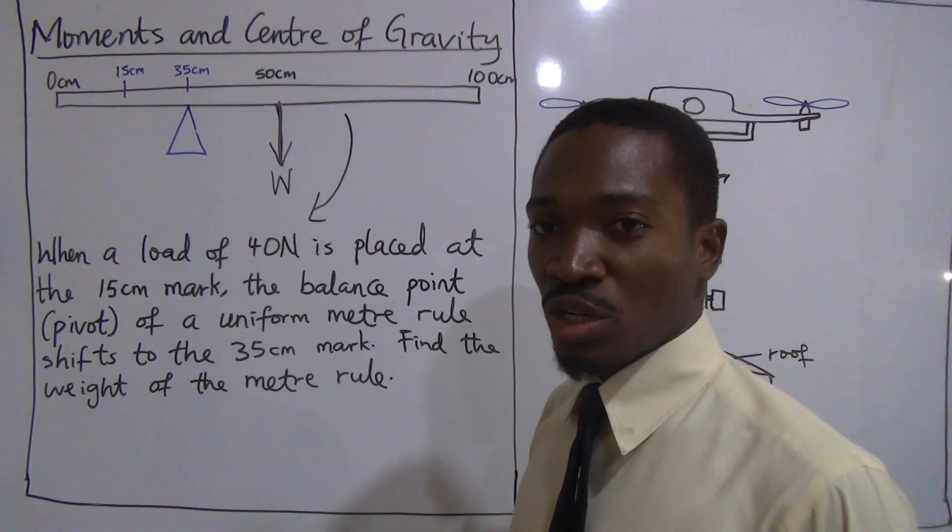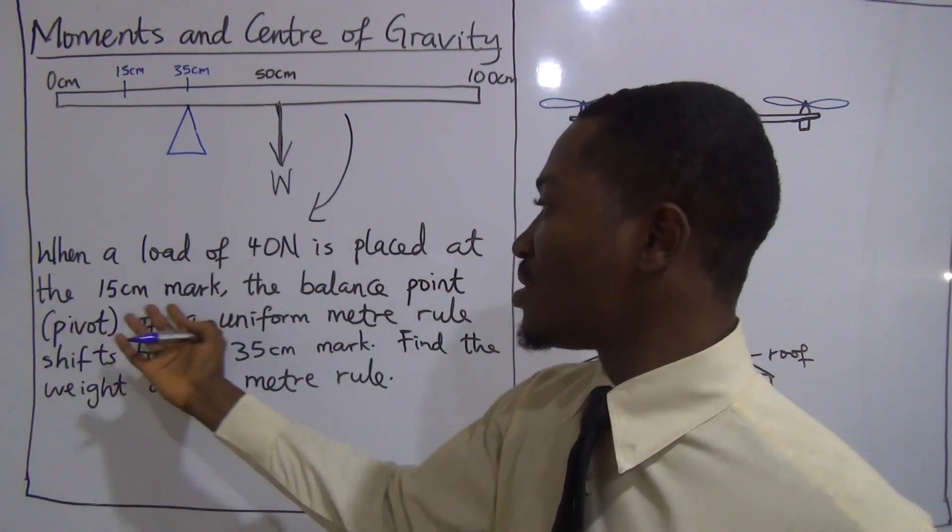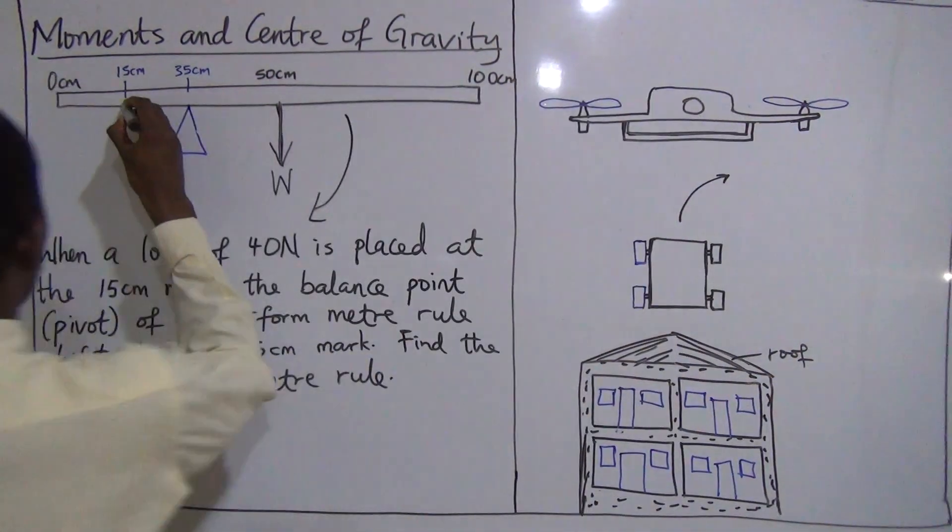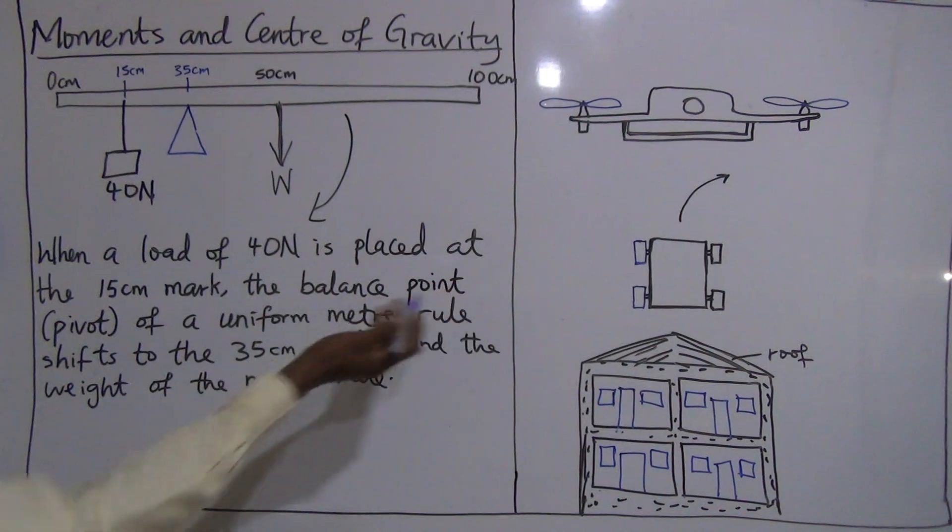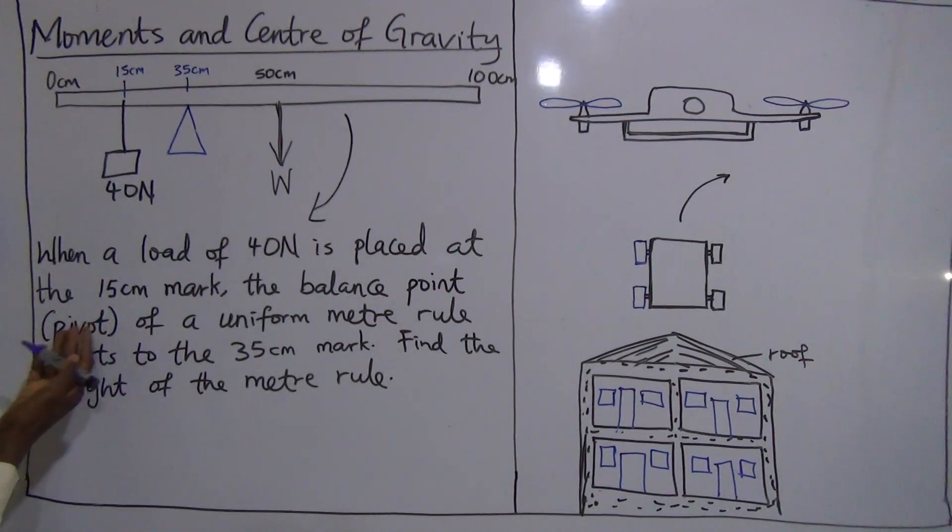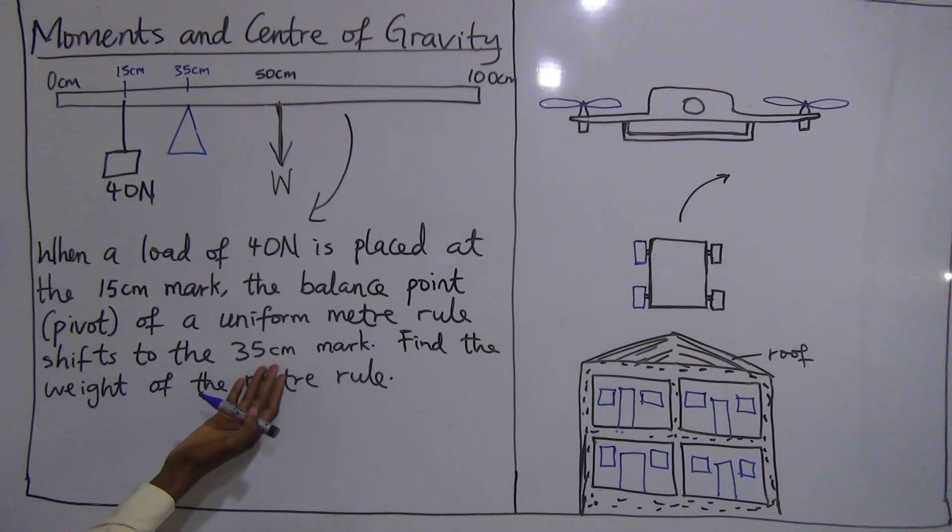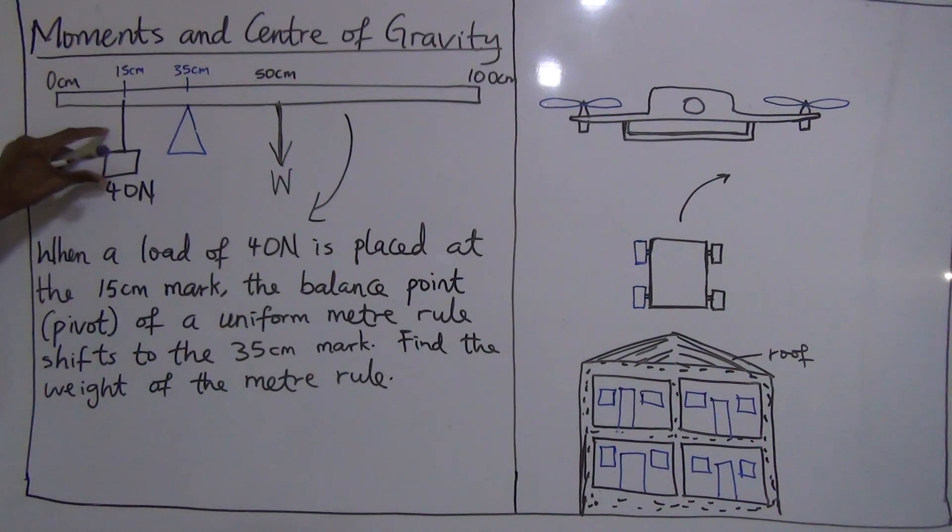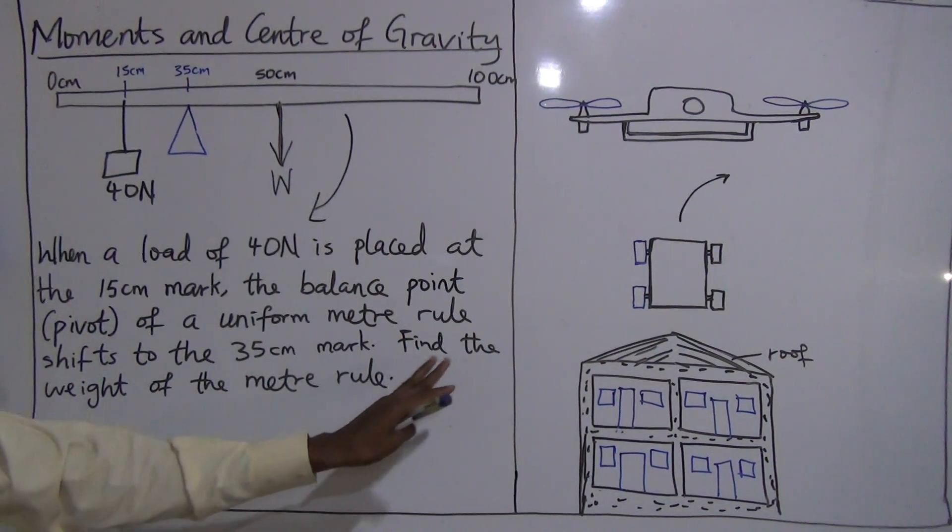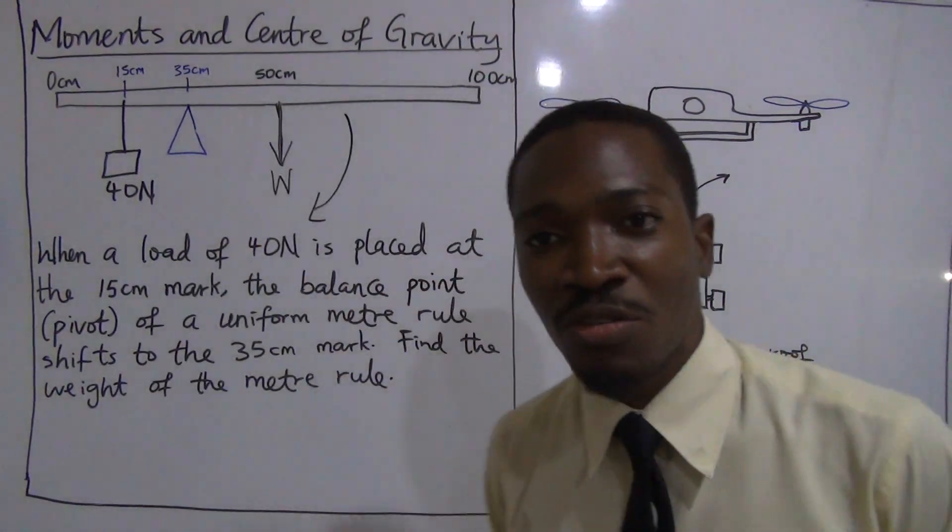Now let us deal with this question. When a load of 40 Newton is placed at the 15 centimeters mark, the balance point, that's the pivot of a uniform meter rule, shifts to the 35 centimeters mark. So the balance point is now here, when you have a load of 40 Newton here. Now you have to find the weight of the meter rule.